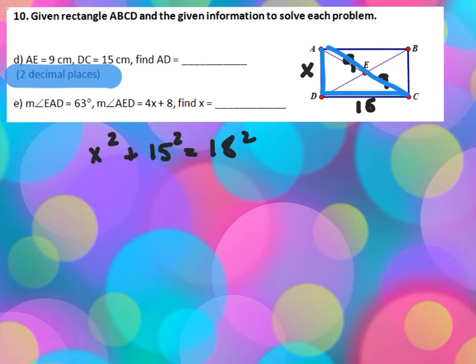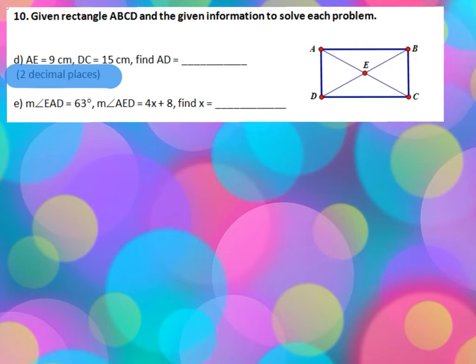Alright, let's take a look now at this last problem. This last problem tells us that EAD, that's this guy, is 63. And then this would also be 63. Base angles of an isosceles have to be equal. And I say, how do I know it's an isosceles?